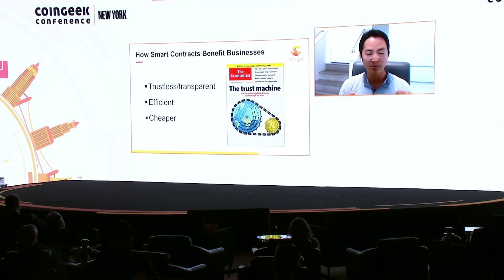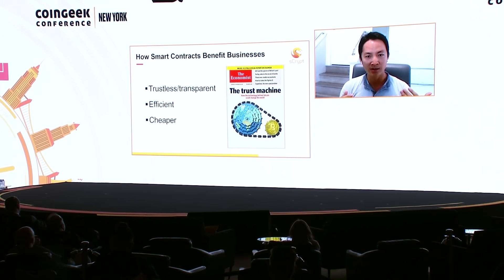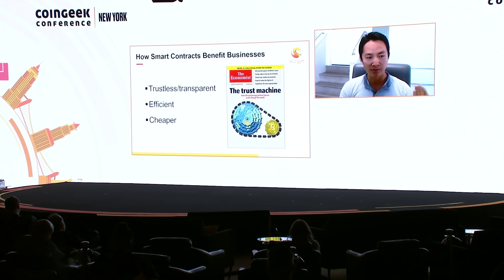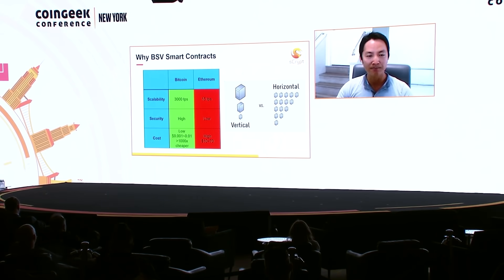Because it's on-chain, everything is transparent, which is great for a lot of applications like gaming. It's also very efficient because everything can be automated. Because of Bitcoin scalability, a lot of transactions can become very cheap because you don't need to rely on a third party like a lawyer or escrow.